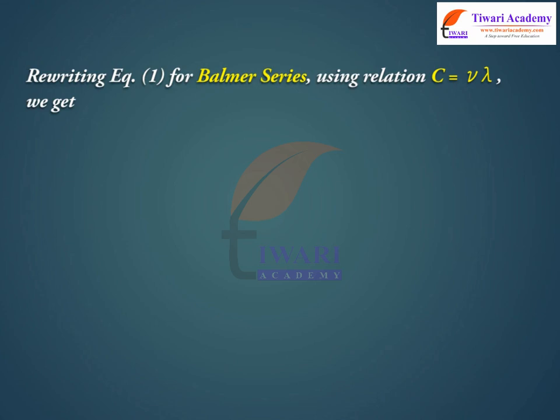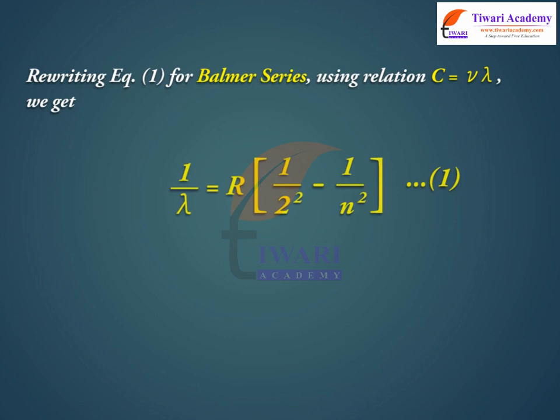Rewriting the Balmer series equation using the relation c = νλ, we get: 1/λ = R(1/2² − 1/n²), and therefore ν = cR(1/2² − 1/n²).